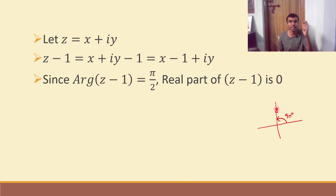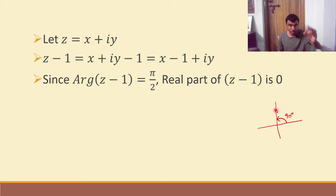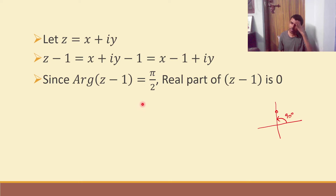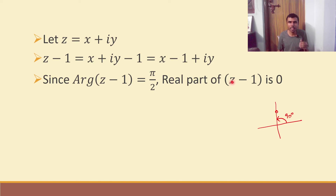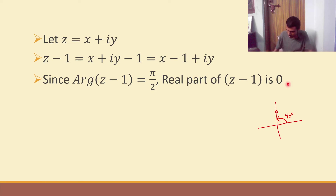Argument pi by 2 is only possible when a point is on the y-axis, because that is when the argument is going to be 90 degrees. Since my complex number z minus 1 is on the y-axis — because its argument is pi by 2 — and on the y-axis any point has x coordinate equal to 0, therefore the real part of z minus 1 is 0.